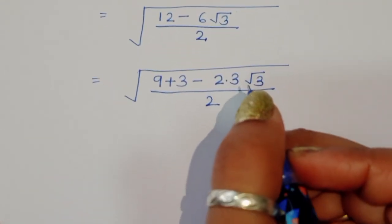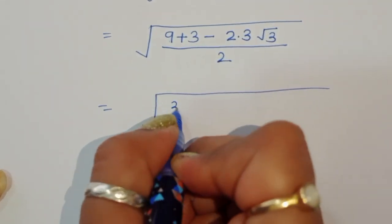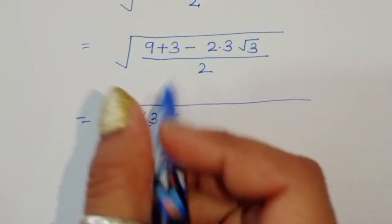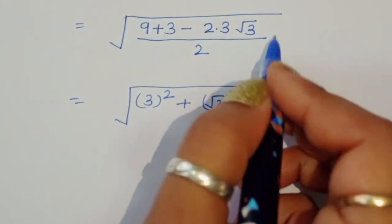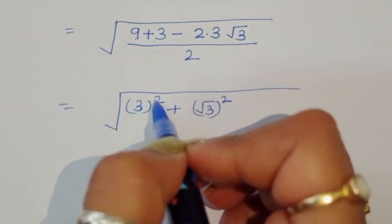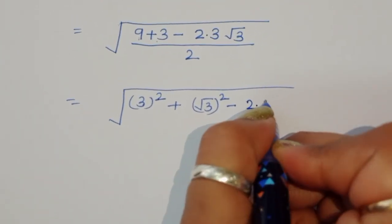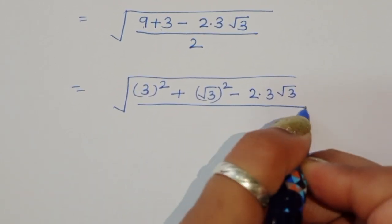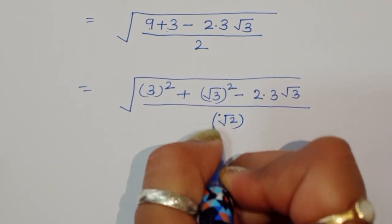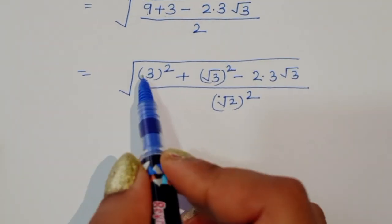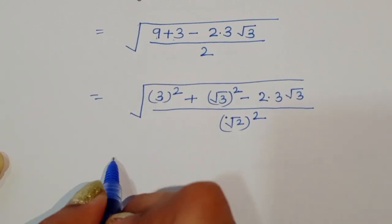We can write 9 as 3 squared, and 3 as (square root of 3) squared. So we have (3 squared plus (square root of 3) squared minus 2 times 3 times square root of 3) divided by 2, converting the numerator into square root form by noting this matches the pattern a squared plus b squared minus 2ab.